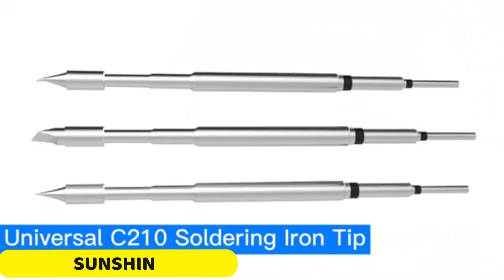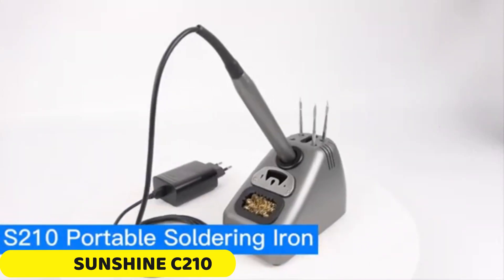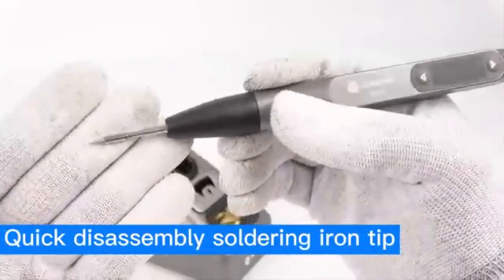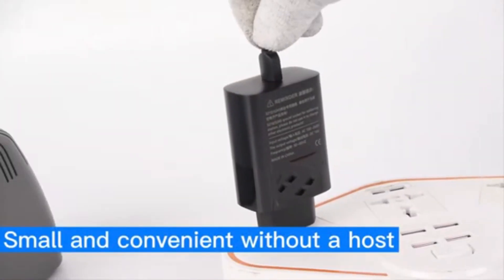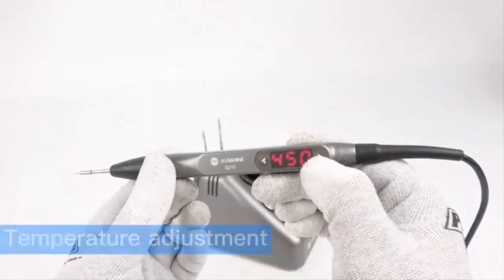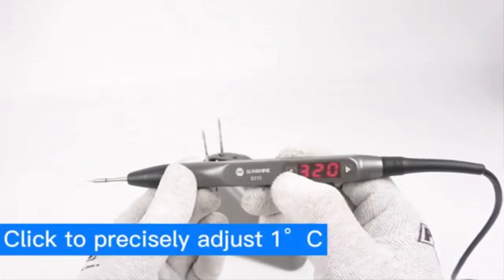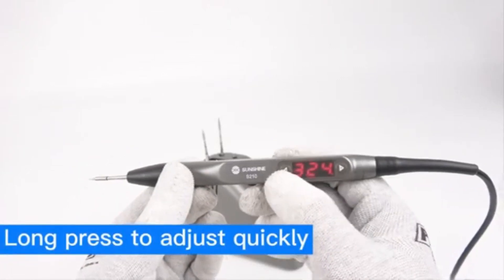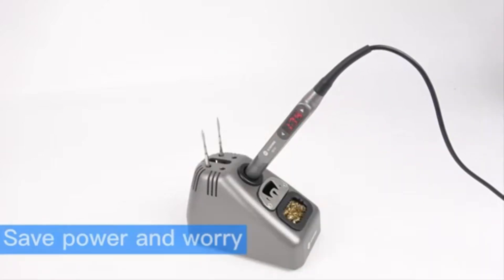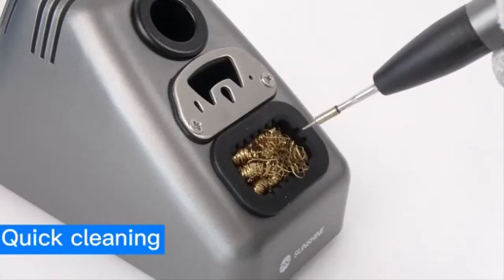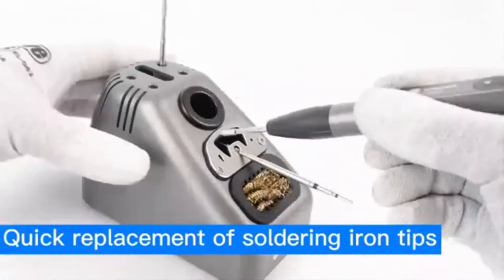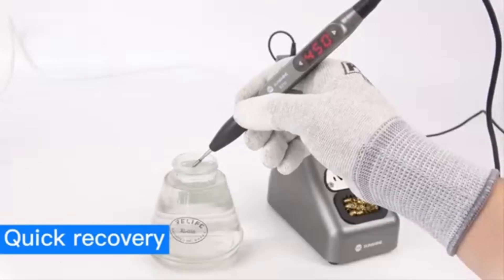Number 4: SUNSHINE C210 Soldering Iron. The SUNSHINE C210 Soldering Iron is a versatile tool that offers power, precision, and convenience for both beginners and experienced soldering enthusiasts. Its key specifications include a net weight of about 500 grams, a handle size of 200x16x15 millimeters, a line length of about 1,314 millimeters, a soldering iron holder of 135x72x83 millimeters, and a package size of 207x121x95 millimeters.